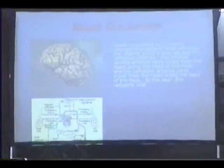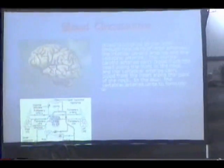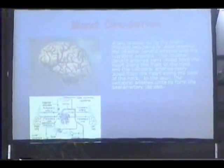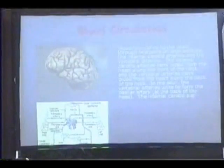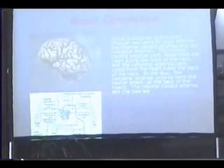Vertebral arteries carry blood from the heart along the back of the neck. In the skull, the vertebral arteries unite to form the basilar artery.